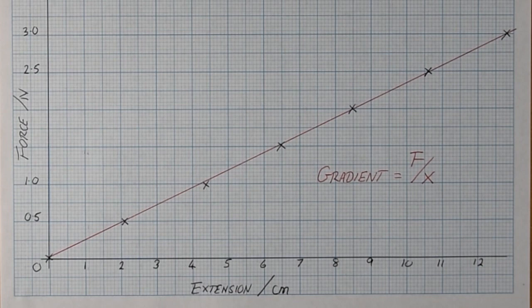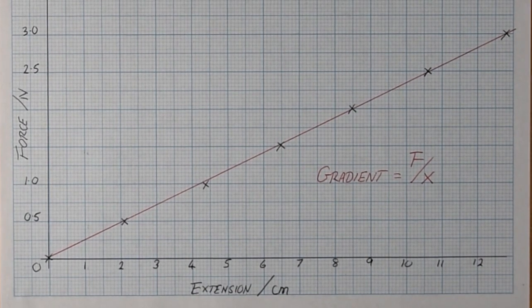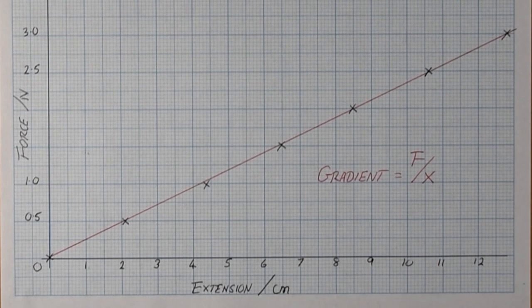This graph produces a straight line going through the origin. It is directly proportional. And this straight line shows that the relationship is linear.